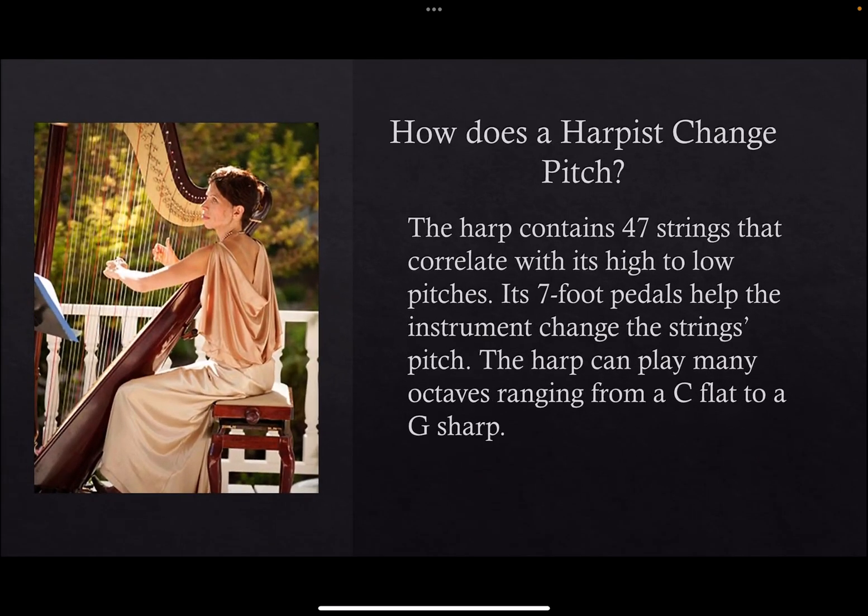How does a harp change pitch? The harp contains 47 strings that correlate with its high to low pitches. Its 7 foot pedals help the instrument change the string's pitch. The harp can play many octaves, ranging from a C-flat to a G-sharp.